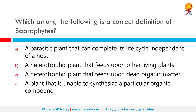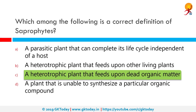Which among the following is a correct definition of saprophytes? The correct answer is a heterotrophic plant that feeds upon dead organic matter. A saprophyte or saprotroph is an organism which gets its energy from dead and decaying organic matter — decaying pieces of plants or animals. Saprophytes are heterotrophs and consumers in the food chain; this is the typical lifestyle of fungi.